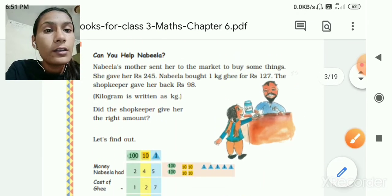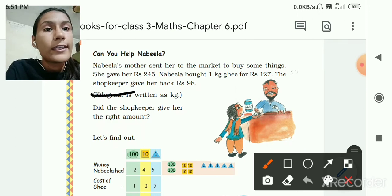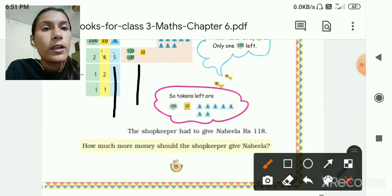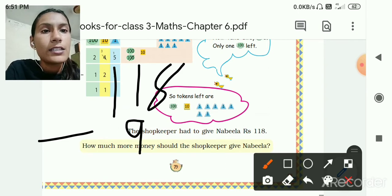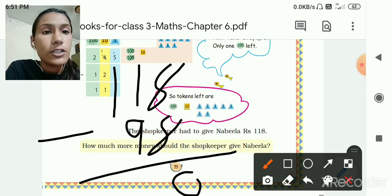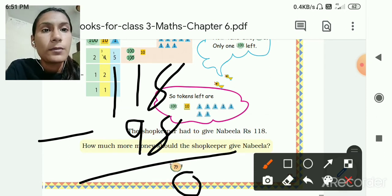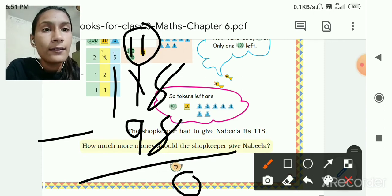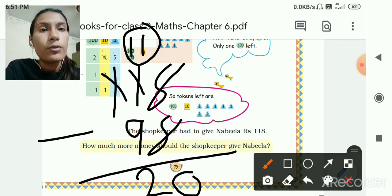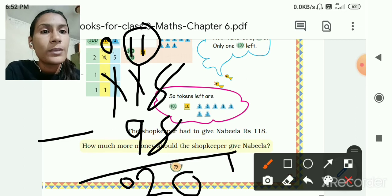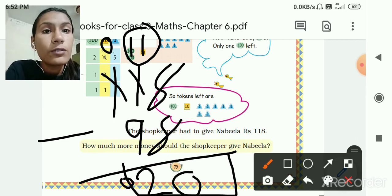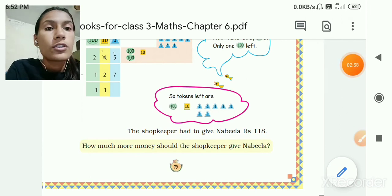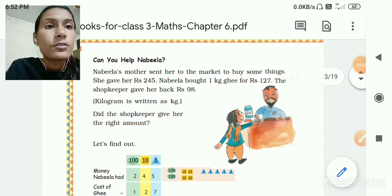The shopkeeper had to give Nabila rupees 118, but the shopkeeper gave her back rupees 98. So 118 minus 98, 8 minus 8 is 0. 1 minus 9 not possible, so borrow 10. 10 plus 1 is equal to 11. 11 minus 9 is 2. So 20 rupees. The shopkeeper has to give 20 rupees to Nabila.